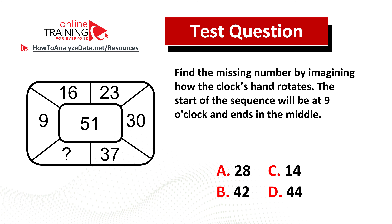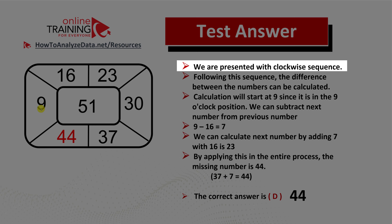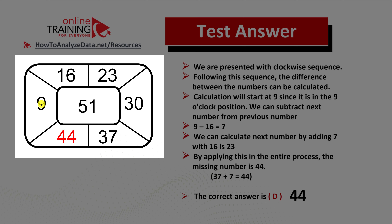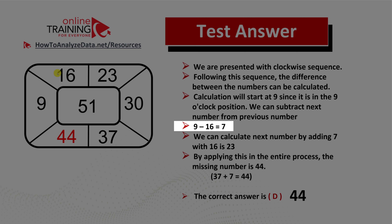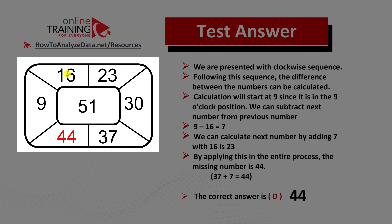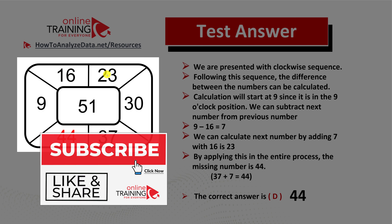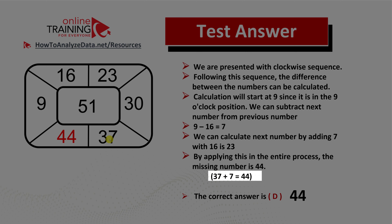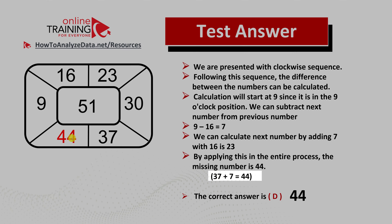Now let's jump to the solution. We are presented with a clockwise sequence. Following this sequence, we can calculate the difference between consecutive numbers. In the case of 9 and 16, the difference is 16 minus 9 = 7. Subtracting 16 from 23 also gives 7. This suggests the sequence increments by 7 each time. 23 plus 7 is 30, 30 plus 7 is 37, so the next number would be 37 plus 7 = 44.